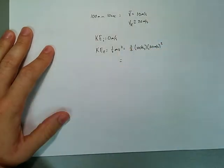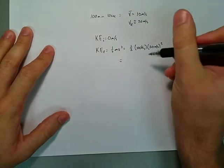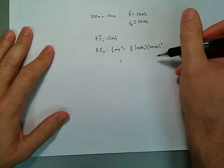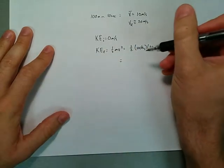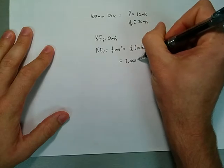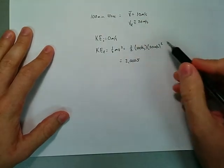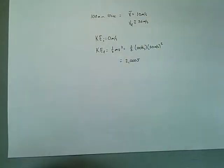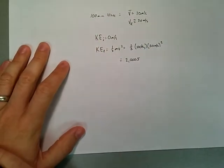If you work that out, his final kinetic energy is one-half of a hundred times 400 and that gives you something like 2,000 joules, which is a kilogram meter squared per second squared. That's a unit of joules, a unit of energy.